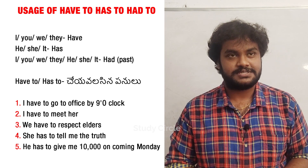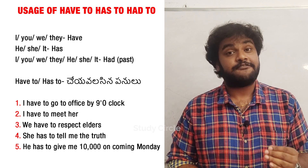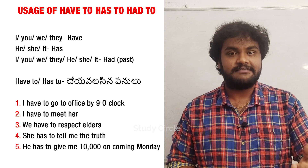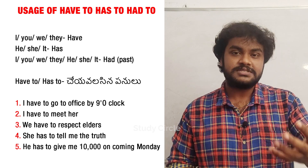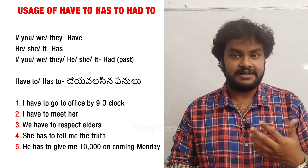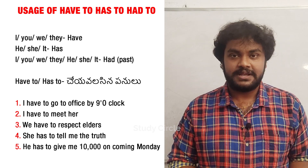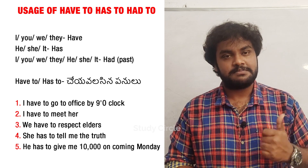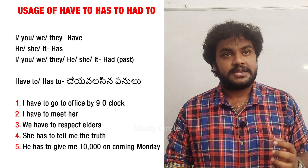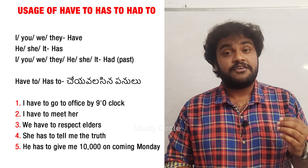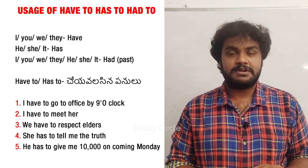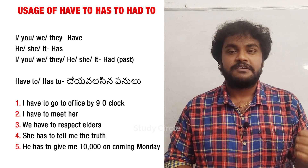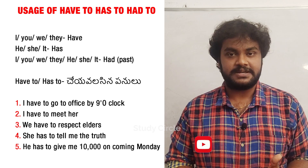Second example: I have to meet her. That means, since we are going to have a job, for a job we have to meet her. So I have to go to office — here 'have to' is used. Next example: We have to respect elders.